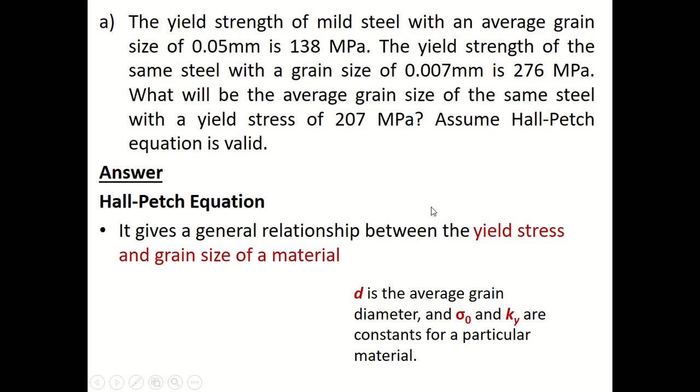Now this is a simple problem using Hall-Petch equation. The yield strength of mild steel with an average grain size of 0.05 mm is 138 MPa. The yield strength of the same steel with a grain size of 0.007 mm is 276 MPa. What will be the average grain size of the same steel with a yield strength of 207 MPa? Assume the Hall-Petch equation is valid.